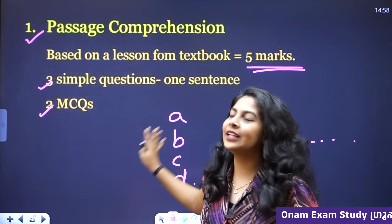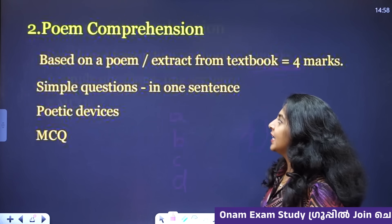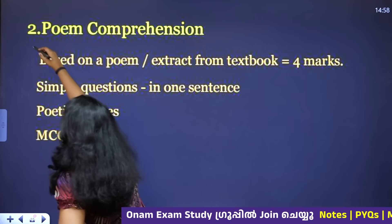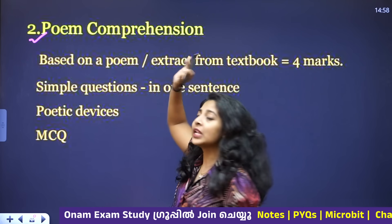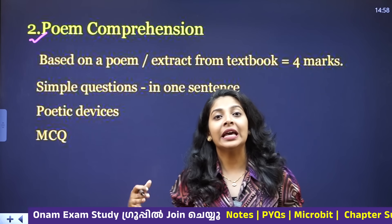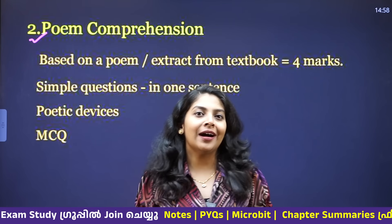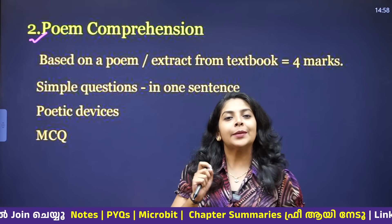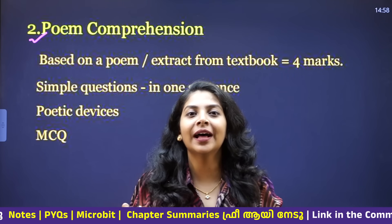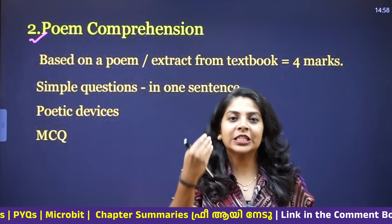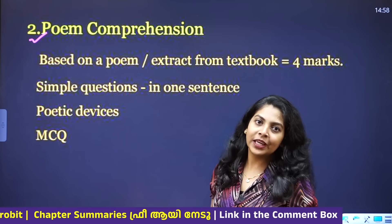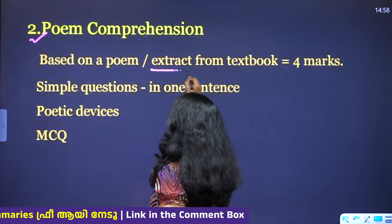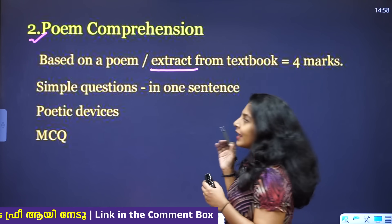The next question is Poem Comprehension. Poem Comprehension is not an icon for us. Now, if you have the answer, we have a 'friends, Romans, countrymen' — they have a speech. They extract it. They have a problem.